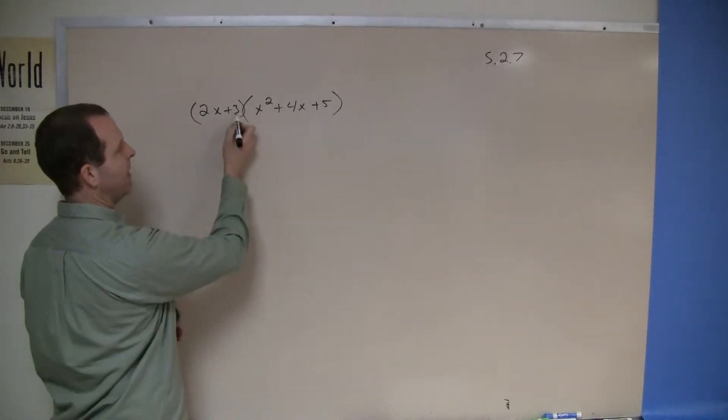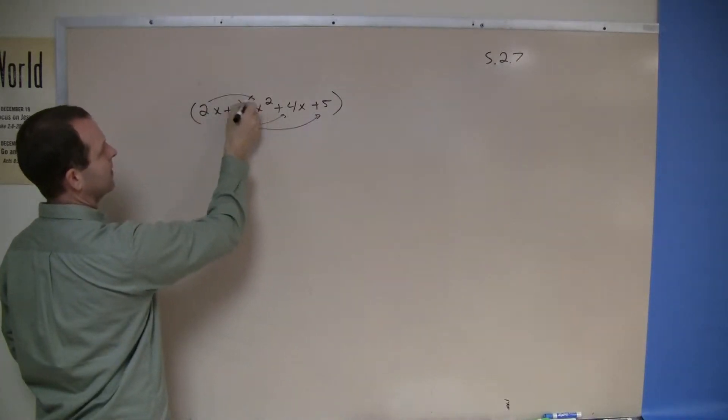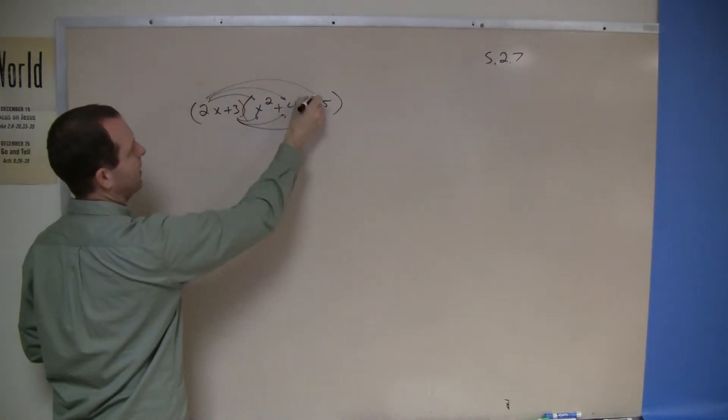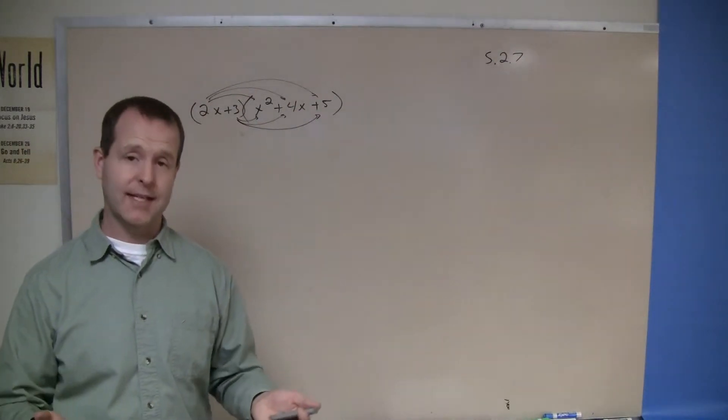Basically, I need to multiply this 3 times every term that's in there, and then this 2x times every term that's in there, basically doing distribution but on a massive scale.